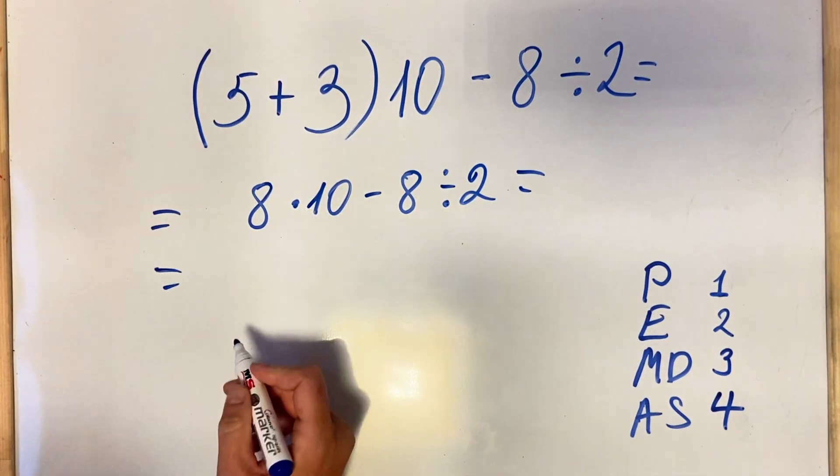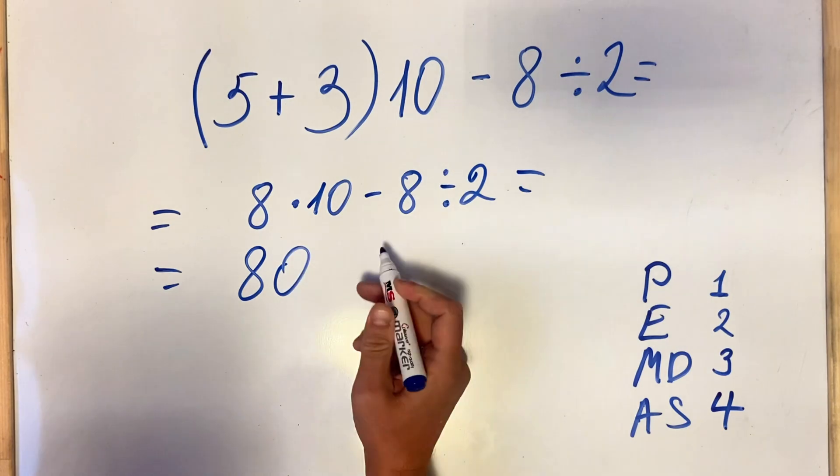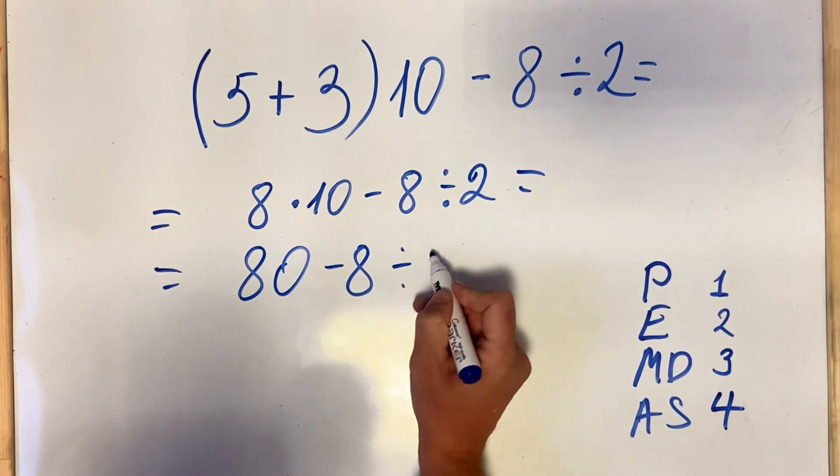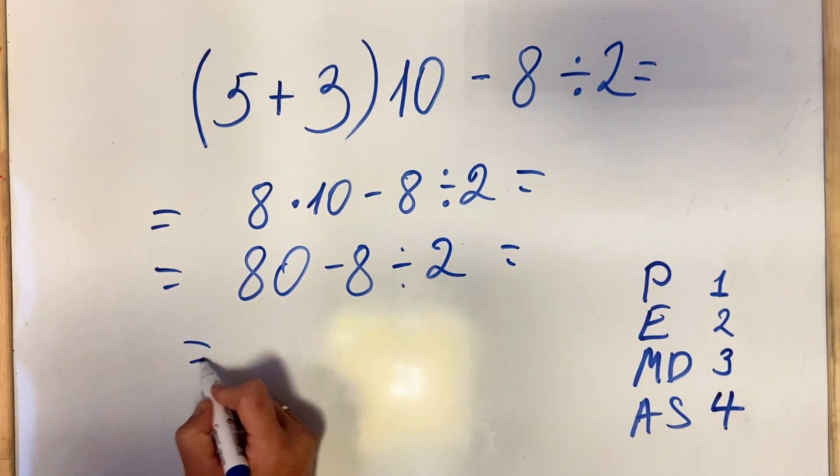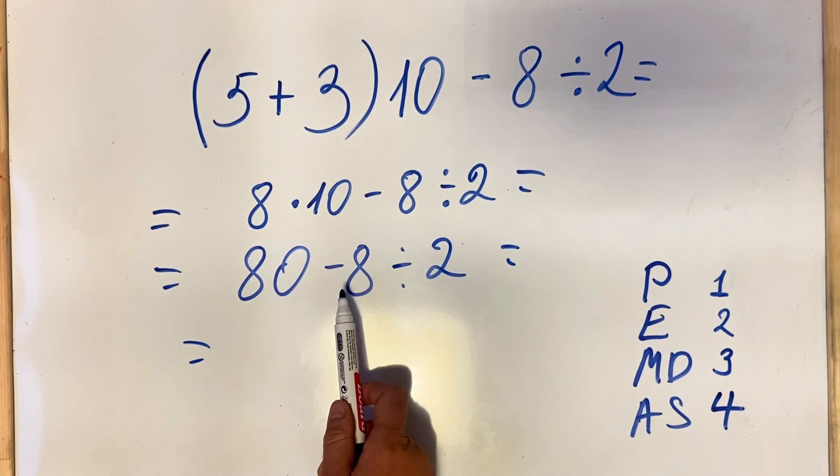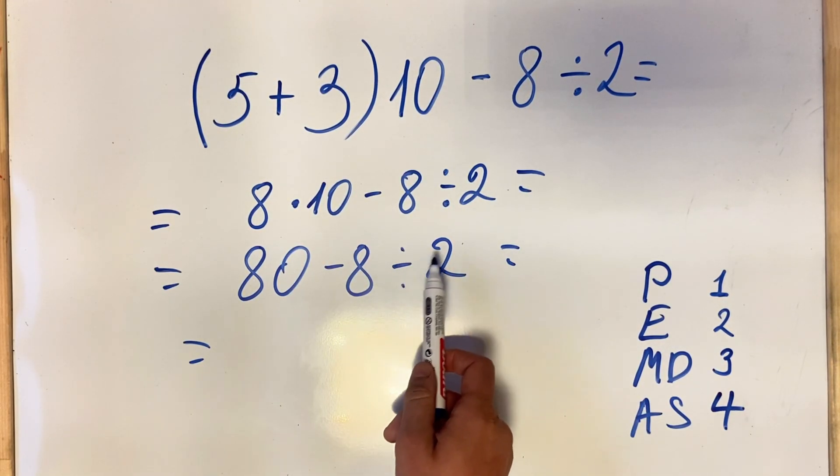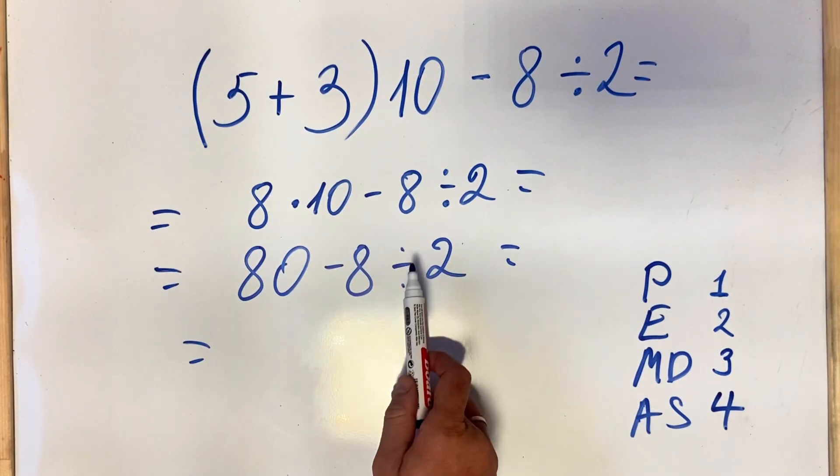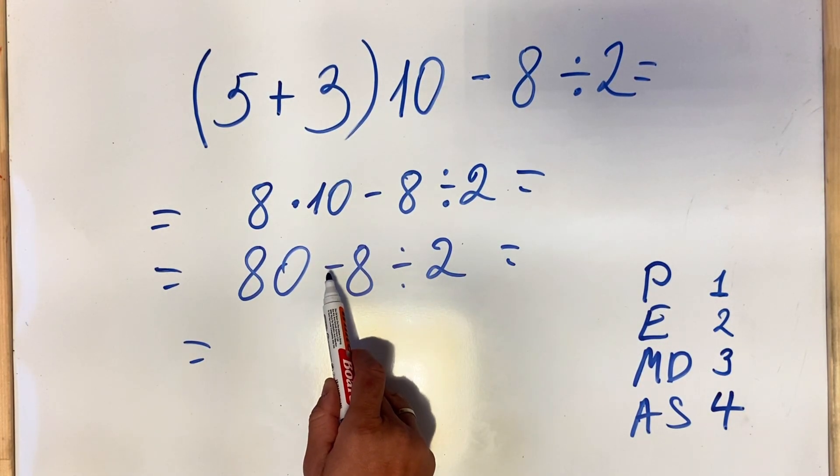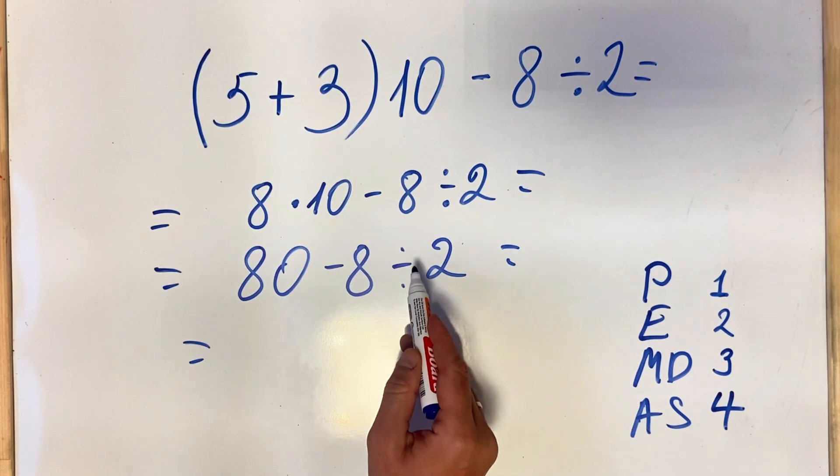In this case we have 80 minus 8 divided by 2. Please don't make the mistake to do subtraction first and then addition. No, division has priority over subtraction so we do the division first.